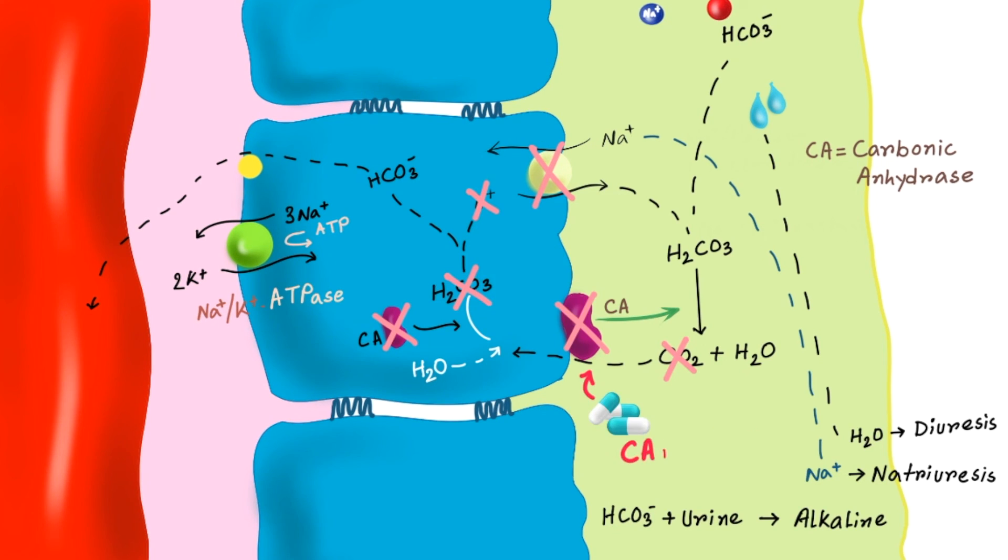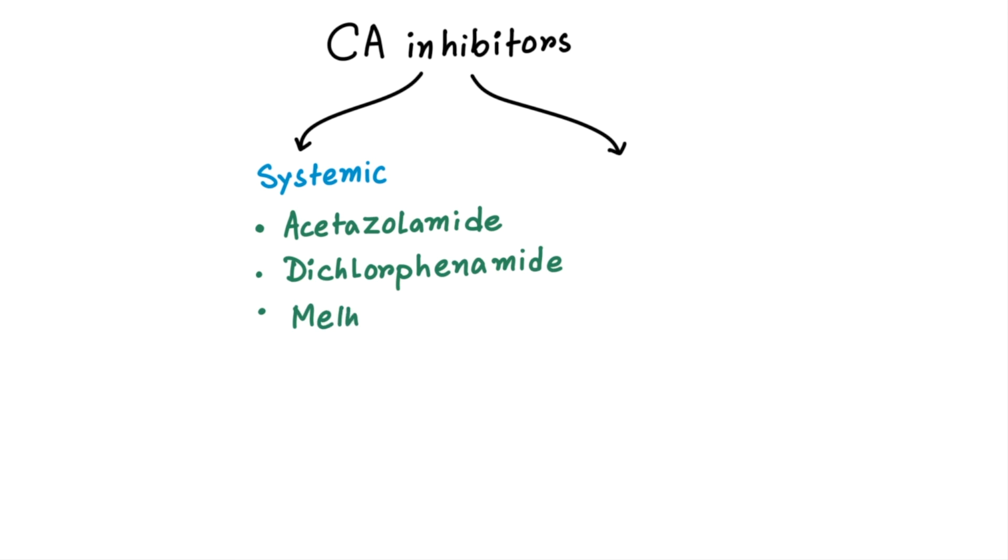The group of drugs that block this carbonic anhydrase enzyme are called carbonic anhydrase inhibitors. Carbonic anhydrase inhibitors are further divided into two groups. One group of drugs which can be used systemically like acetazolamide, dichlorphenamide and metazolamide. And other group of drugs can be used topically like brinzolamide and dorzolamide.